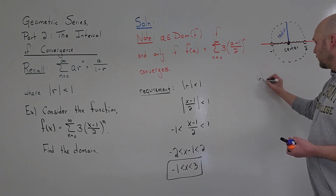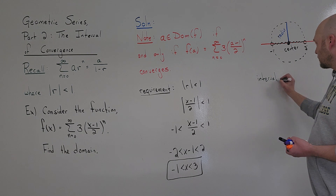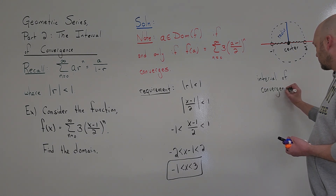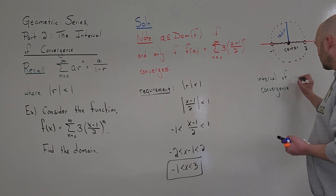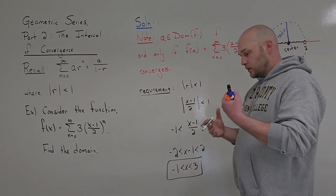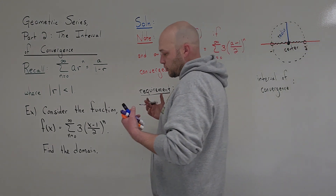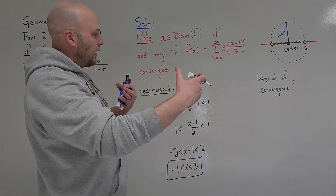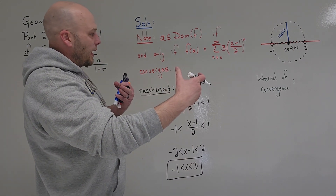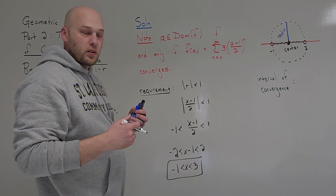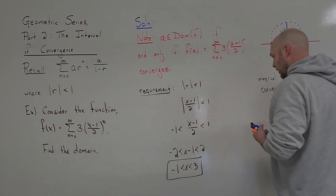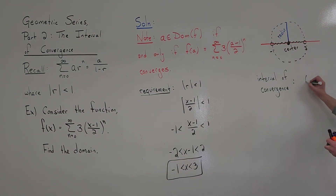The interval of convergence is the entire interval on the x-axis for which the series is convergent. In this particular case, the interval of convergence would be minus 1 to 3.